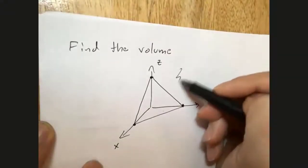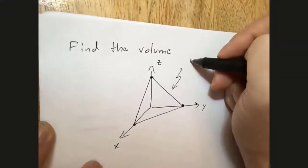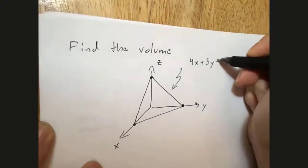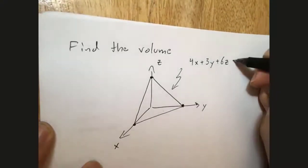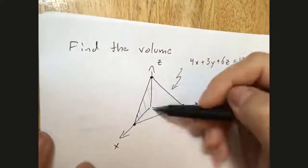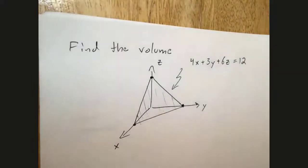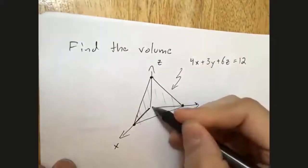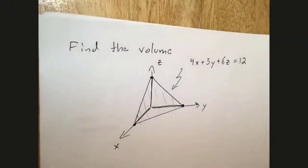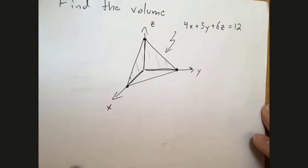This is the plane 4x plus 3y plus 6z equals 12, and I want to find the volume inside of there. You get this kind of tetrahedron. It is a tetrahedron, not a regular tetrahedron where all sides are the same dimensions, but it's a four-sided figure where each side is a triangle.